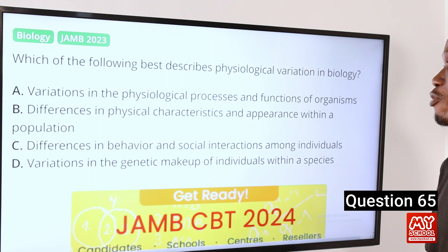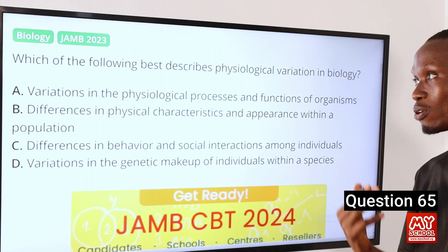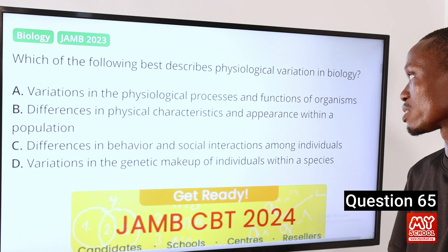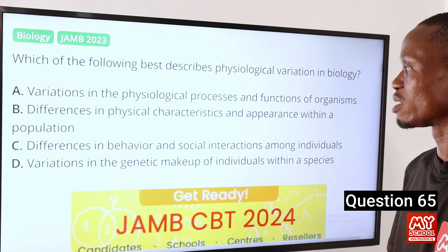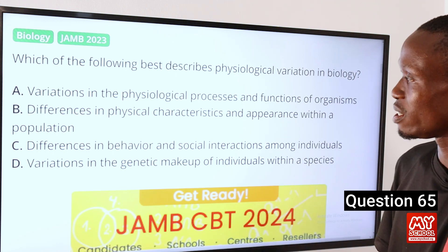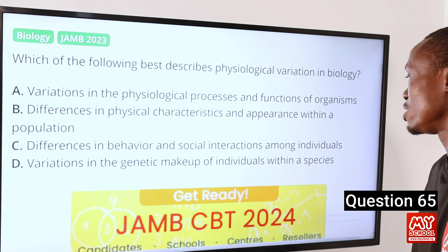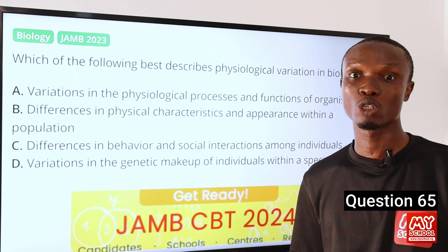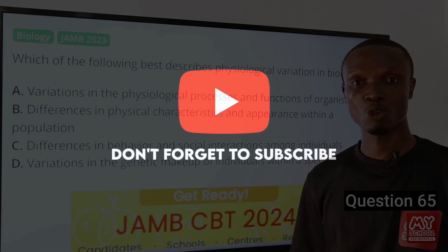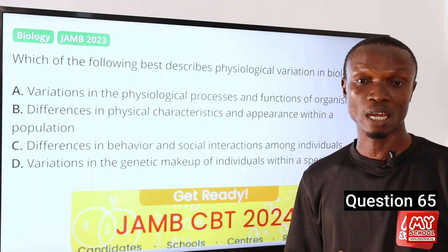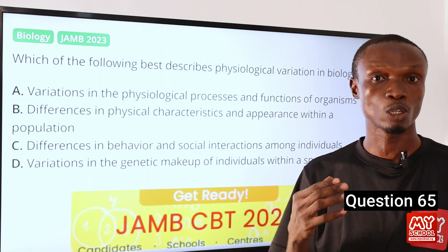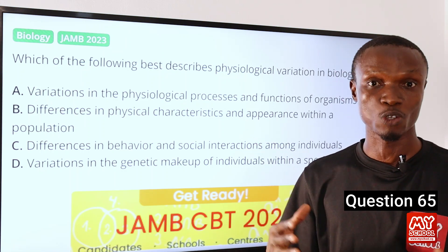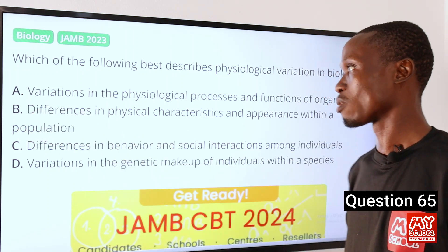Question 65: Which of the following best describes physiological variation in biology? A: Variation in the physiological processes and functions of organisms. B: Differences in physical characteristics and appearance within a population. C: Differences in behavior and social interactions among individuals. D: Variations in the genetic makeup of individuals within a species. In biology, physiological variation is defined as the variation in physiological processes and functions of an organism, encompassing metabolic processes, hormone regulation, immune responses, cellular function, and physiological adaptation. So option A is correct.